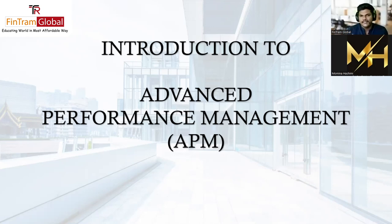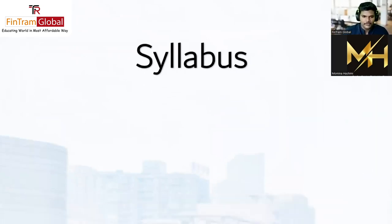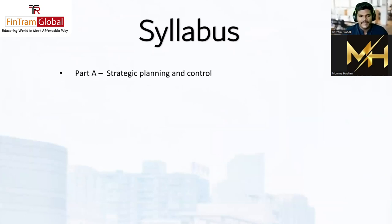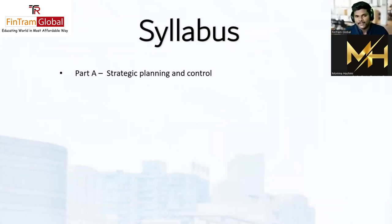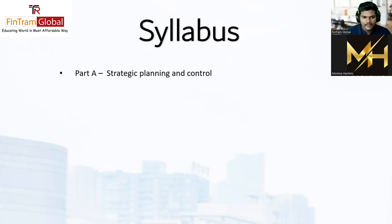Let's understand what the APM syllabus contains. First, we have Part A: Strategic Planning and Control. This syllabus area is similar to what you may have learned in the SBL paper. There are a lot of similar topics and matrices such as the PEST model, the BCG matrix, and the stakeholder mapping matrix. All those things are included within this area. This paper is a strategic-level paper, so you have to think at a strategic level rather than just from the operating level.